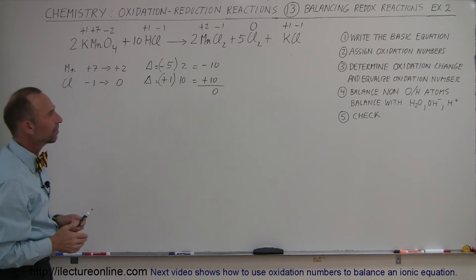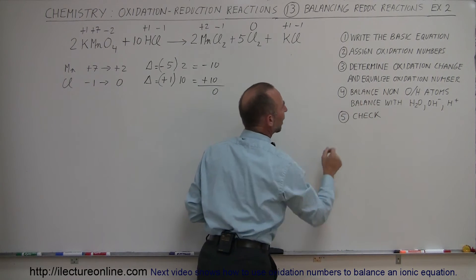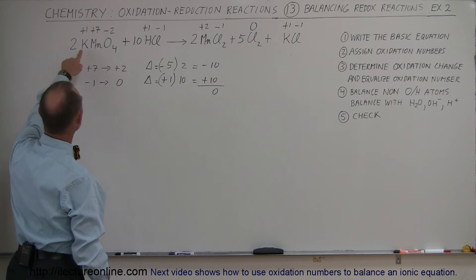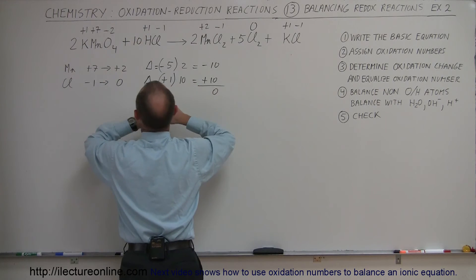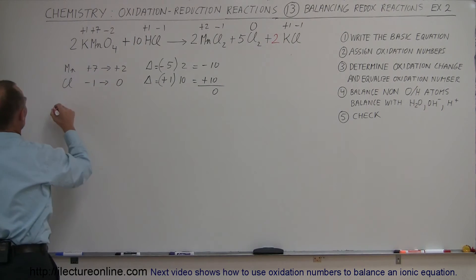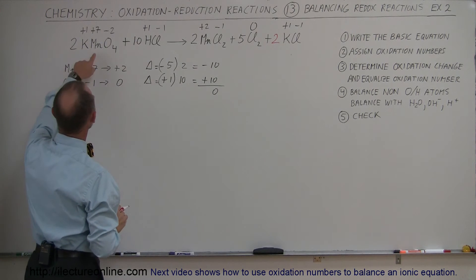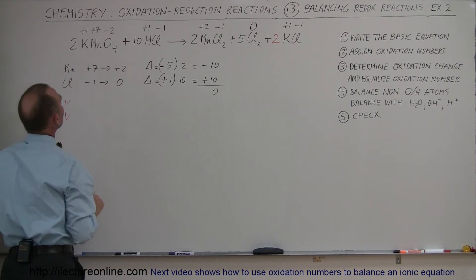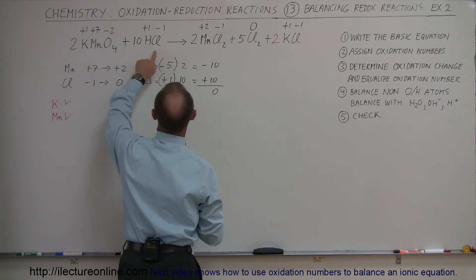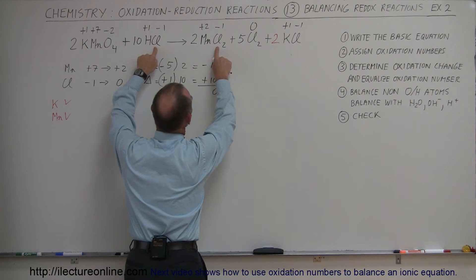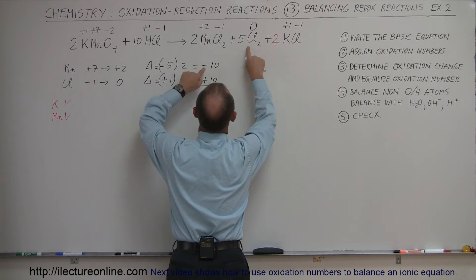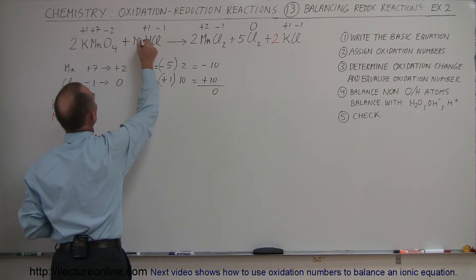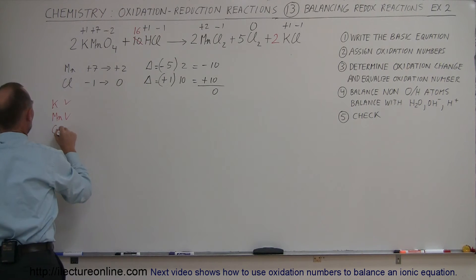But they're not balanced yet for the rest of the atoms. The next step after equalizing the oxidation numbers is to balance the non-oxygen and hydrogen atoms. We have two potassiums on the left and only one on the right, so we plug in 2 to balance potassium. We have two manganese on each side — so manganese is balanced. For chlorine, we have 10 here, 4 here, 10 here, and 2 more over there — that's 16. So we plug in 16 on the other side, and now chlorine is balanced as well.